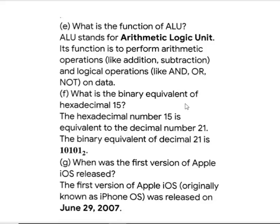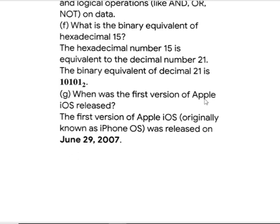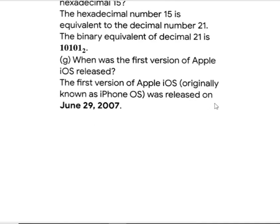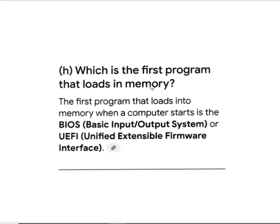What is the binary equivalent of hexadecimal 1A? That is 1 0 1 0 1 0. What is the first version of the Apple iOS? Released June 29, 2007. Which is the first program that loads in memory? The iOS — Basic Input Output System.